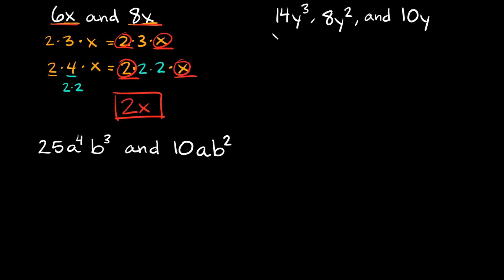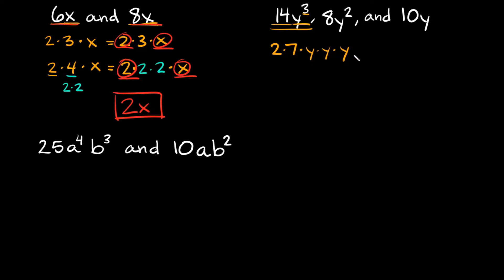Now let's try a couple more examples. We're going to find the greatest common factor between 14y³, 8y², and 10y. Starting with 14y³ — for the number 14, we can write 2 times 7, and both are prime so there's nothing left to break down. Then y cubed is the same as y times y times y, since the exponent tells you how many times to write the variable. So we're done with 14y³.